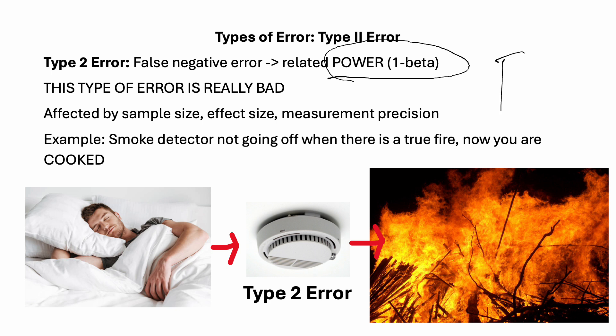Type 2 error is also represented by beta. An example of type 2 error — and the reason I typically remember it as the more bad type of error — think of this: you're sleeping and there is a fire in the home, but the smoke detector doesn't go off even though there is a fire, and you wake up with your home in flames. All because the smoke detector didn't work and committed a type 2 error.